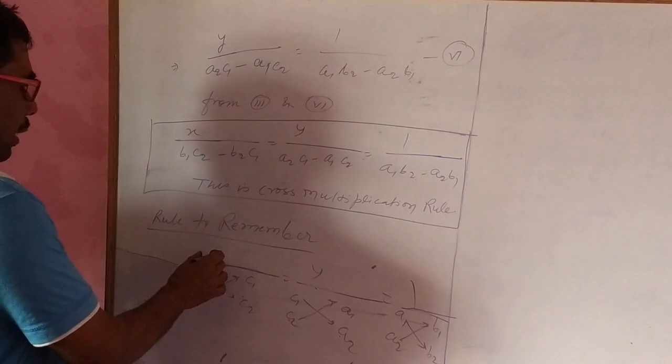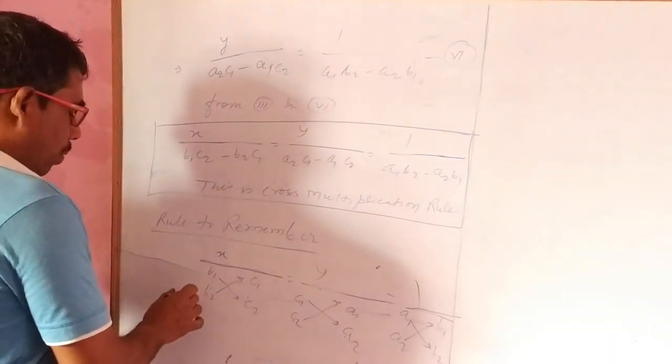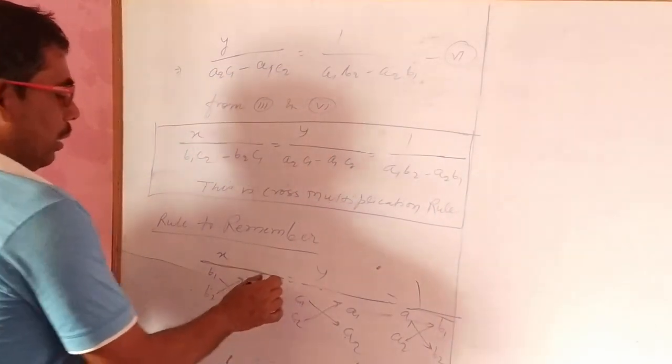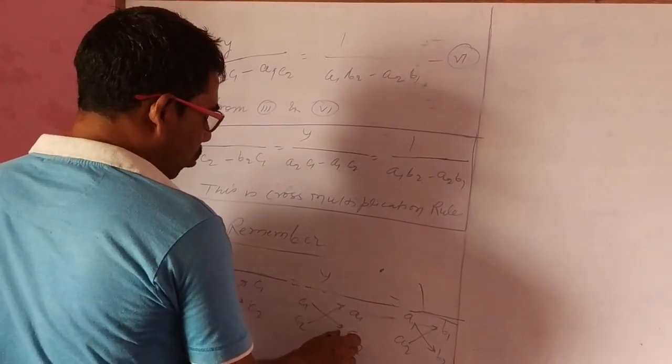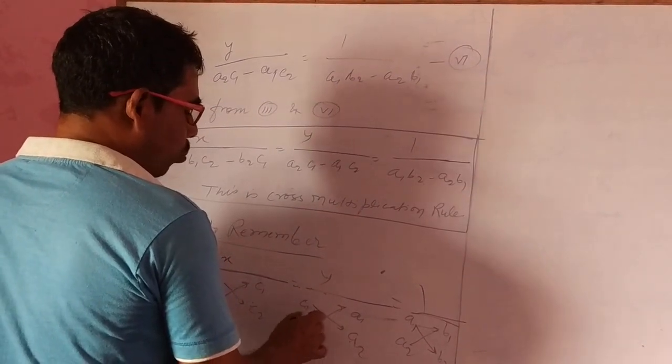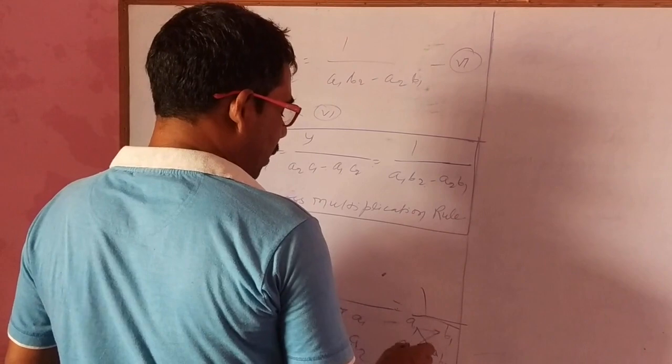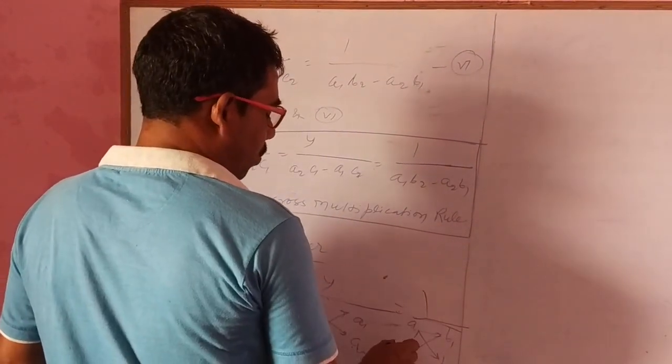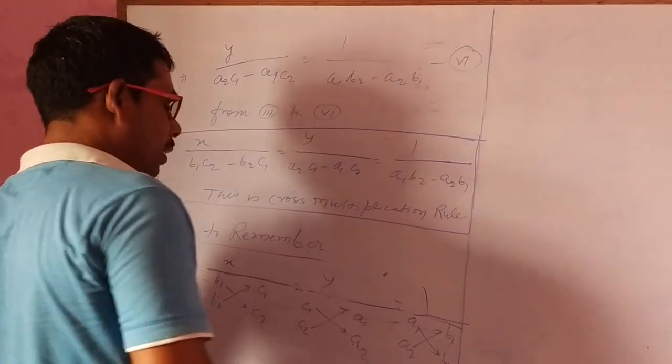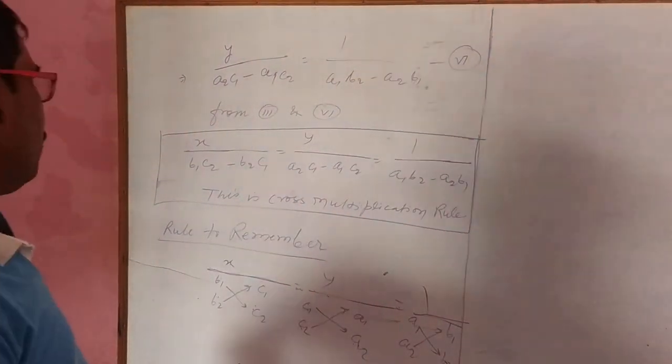This can we get: x by b1c2 minus b2c1 equal to y by c1a2 minus c2a1 equal to 1 by a1b2, here a1b2, minus a2b1. This is the trick to remember this rule.